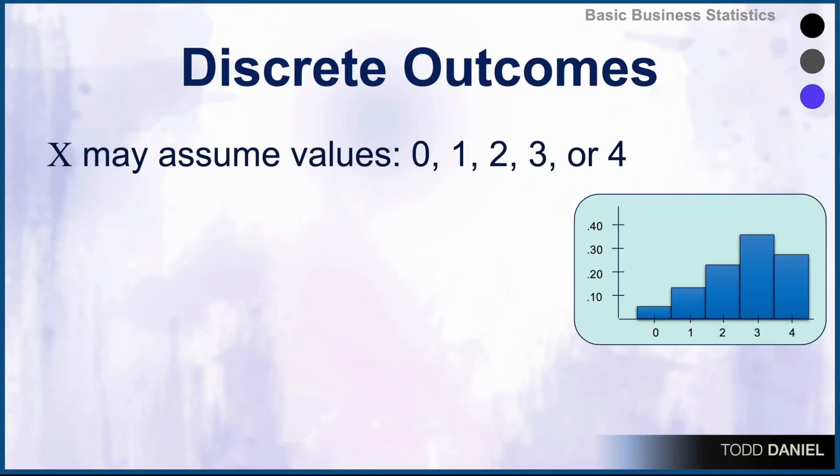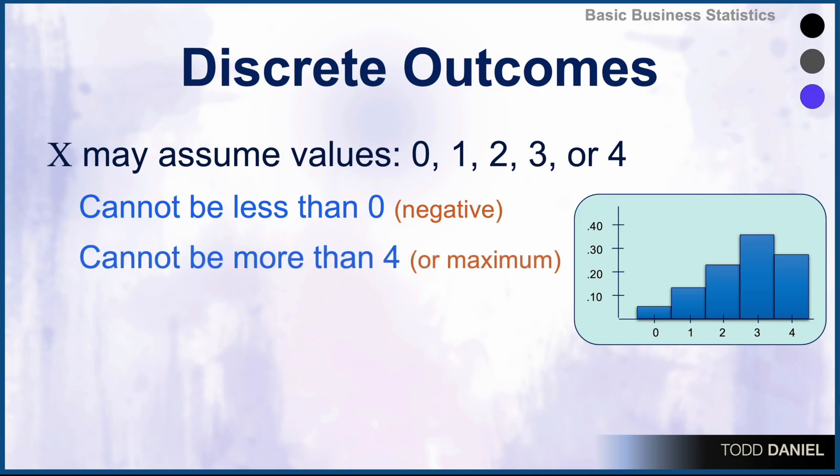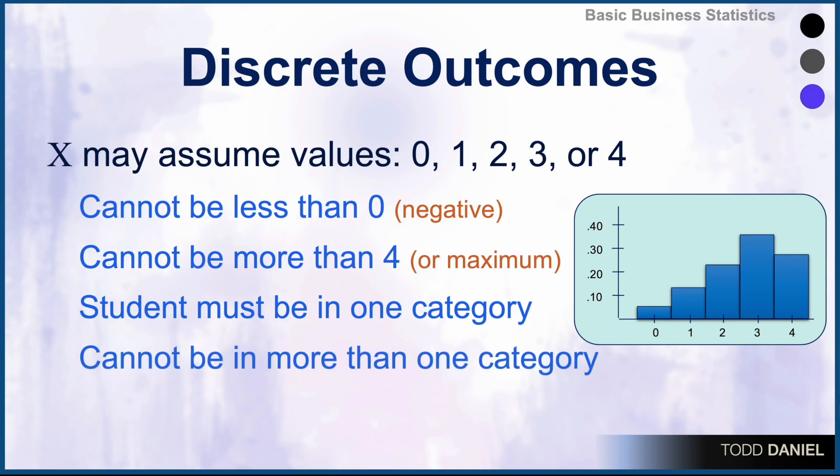What makes this a discrete probability distribution is that the potential outcomes are always and only integers. The answer for how many tests you passed can only be zero, one, two, three, or four. The outcome cannot be a score less than zero, or a negative number. The outcome cannot be a score more than four, or the maximum in that category. Every student must be in one category. You cannot have passed both two and four tests. And you cannot be in more than one category. Similarly, you cannot be between categories, passing 2.5 tests.